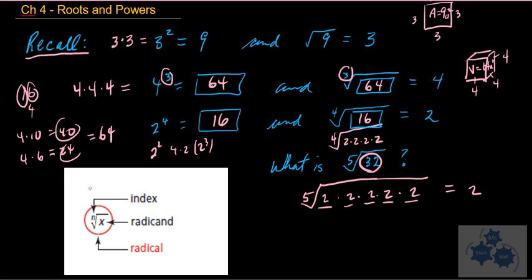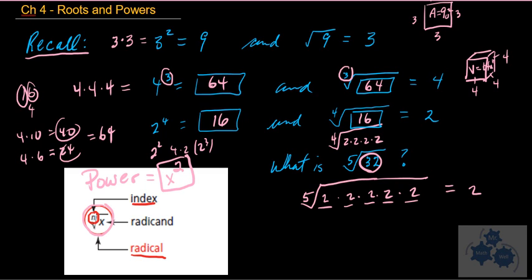Now let's talk about powers. A power is a number, letter, or variable that has some kind of exponent — the whole thing is a power. If it has a root sign, that's called a radical. The number in the index position tells you the type of root: index of 3, 4, or 5. If there's no number there, the index is 2 — because it's a square root, and we don't write it explicitly.